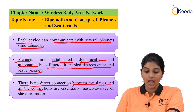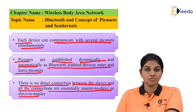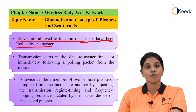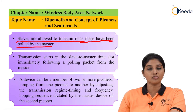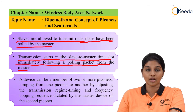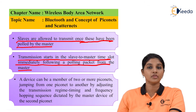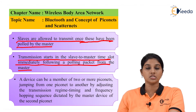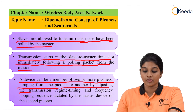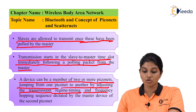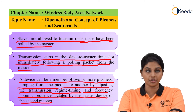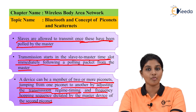There is no direct connection between slaves — all connections are essentially master-to-slave or slave-to-master. Slaves are allowed to transmit only once they have been polled by the master. Transmission starts in the slave-to-master time slot immediately following polling packets from the master. A device can be a member of two or more Piconets, jumping from one Piconet to another by adjusting the transmission timing and frequency hopping sequence dictated by the master of the second Piconet.